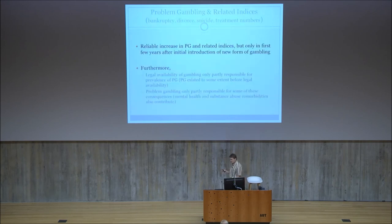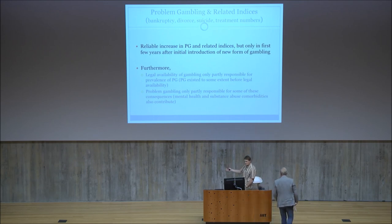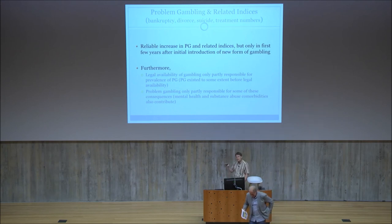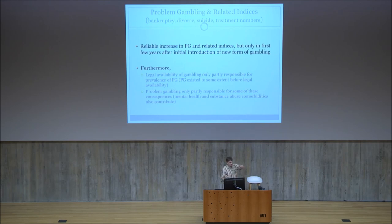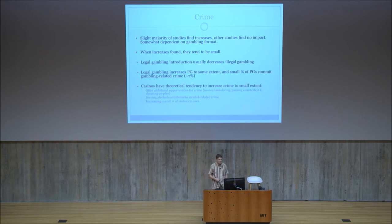Social indices — problem gambling related indices are equally important. There's a reliable increase in problem gambling subsequent to gambling introduction, but usually only in the first few years after introduction of a new form. Legal availability of gambling is only partly responsible for the prevalence of problem gambling — it existed to some extent prior, and mental health and substance use comorbidities, which are very common in problem gambling, also contribute. There is some truth to the fact that impacts diminish with time. Crime is a complex issue — the overall results suggest crime does increase to a small extent, but you generally find a decrease in illegal gambling activity.